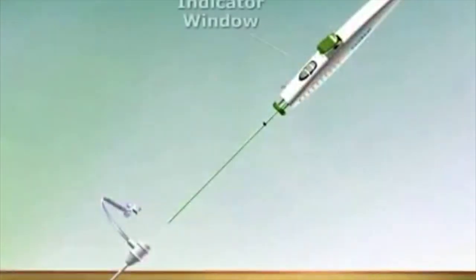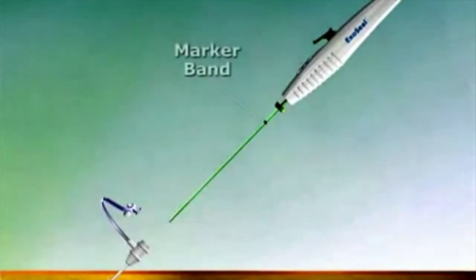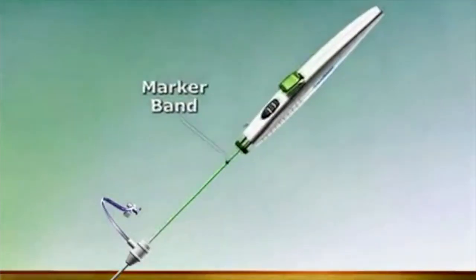Orient the device so that the indicator window on the handle faces upwards. Insert the delivery shaft into the femoral sheath up to the marker band on the delivery shaft.